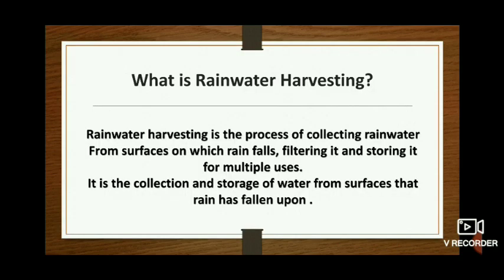What is rainwater harvesting? Rainwater harvesting is the process of collecting rainwater from surfaces on which rain falls, filtering it, and storing it for multiple uses.